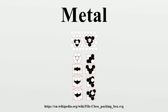The alloys of aluminium, titanium and magnesium are valued for their high strength-to-weight ratios. Magnesium can also provide electromagnetic shielding. These materials are ideal for situations where high strength-to-weight ratio is more important than material cost, such as in aerospace and some automotive applications. Alloys specially designed for highly demanding applications, such as jet engines, may contain more than 10 elements.